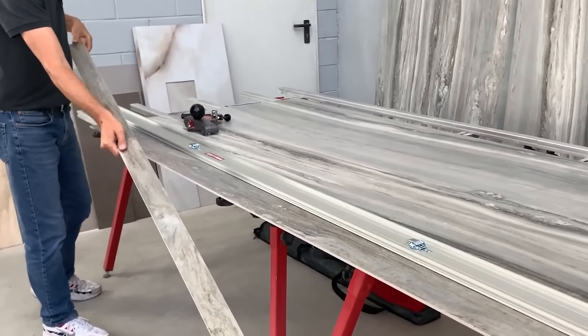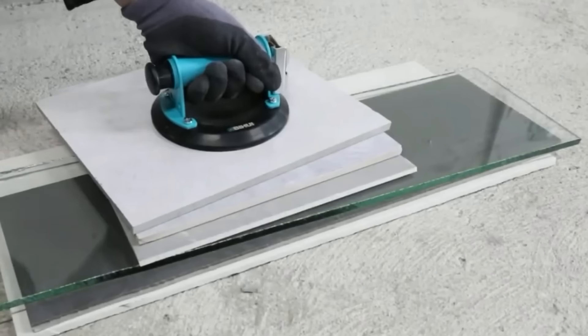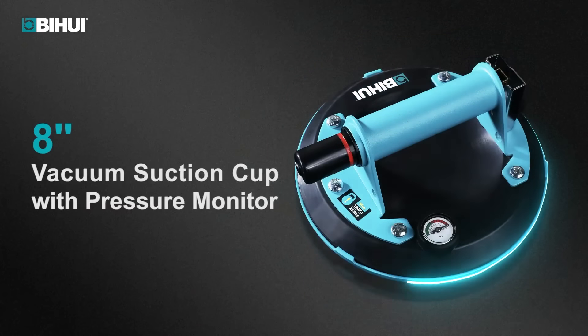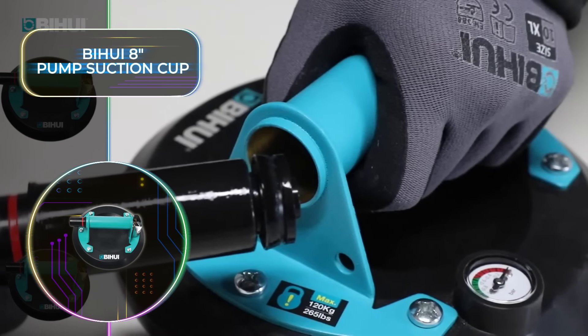Bihui 8-inch Pump Suction Cup. Transporting ultra-delicate porcelain slabs is no longer the nerve-wracking and risky task it once was. These pump suction cups are the ideal choice for anyone working with delicate surfaces that need to be held in place. At the moment you can choose from two options. Option one has a retractable handle with a built-in pressure gauge for precise control, perfect for heavy-duty lifting tasks.